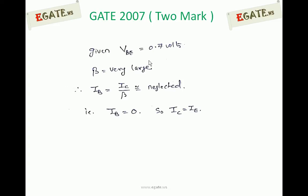Since IB is equal to zero, we can write IC is equal to IE. So if Beta is very large, collector current equals emitter current.